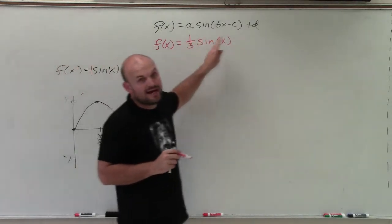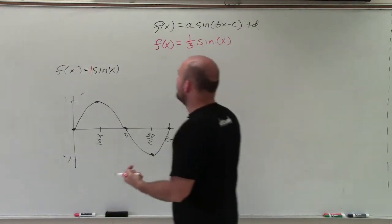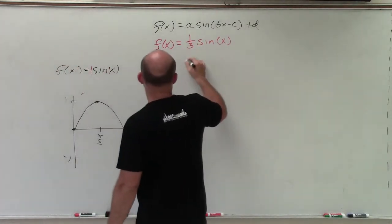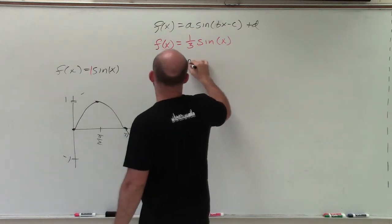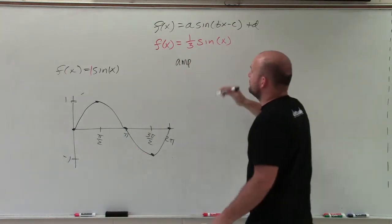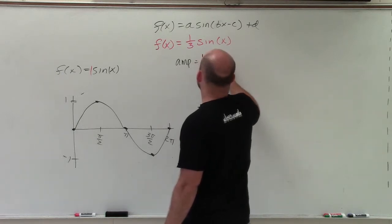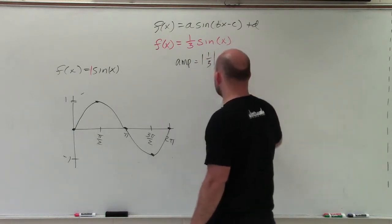So when we compute the amplitude, all we're simply doing is taking the amplitude, which is going to be the half distance, again, from the maximum, is equal to the absolute value of a, which is just equal to 1/3.